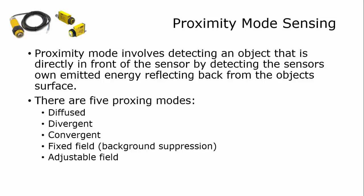Welcome back. In part two of this video we'll pick up where we left off with proximity mode sensing. Proximity mode involves the detection of an object that is directly in front of the sensor by detecting the sensor's own emitted energy being reflected back to the object.